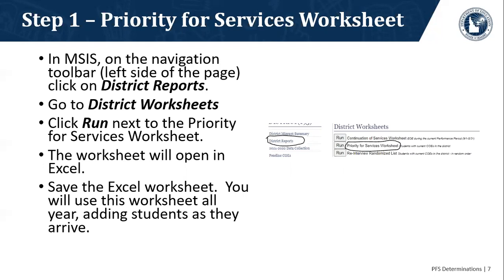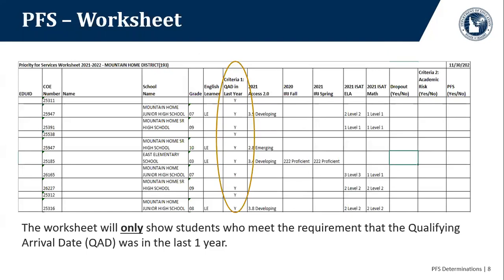You may run it again later to see if some students have scores showing, but you'll continue to use the worksheet you ran first thing in the fall, adding students to it as they arrive throughout the year. Here is the worksheet — I ran this one for Mountain Home School District. In the criteria one 'QAD in the last year' column, every single student has a Y for yes. We don't show students that don't meet this first qualification, because the computer handles that. The second criteria — student risk factors — requires human review of each student.